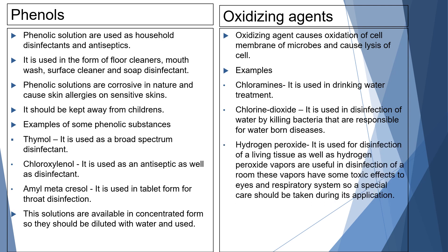Chlorine dioxide, it is used in disinfection of water by killing bacteria that are responsible for water-borne diseases. The next one is hydrogen peroxide. It is used for disinfection of living tissue as well as hydrogen peroxide vapors are useful in disinfection of a room. These vapors have some toxic effects to eyes and respiratory system. So a special care should be taken during the application.